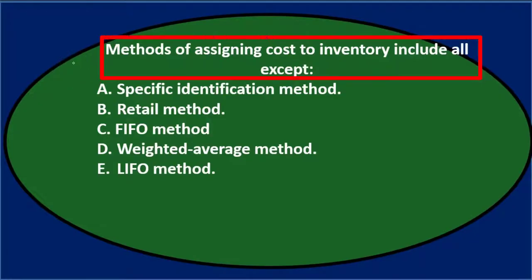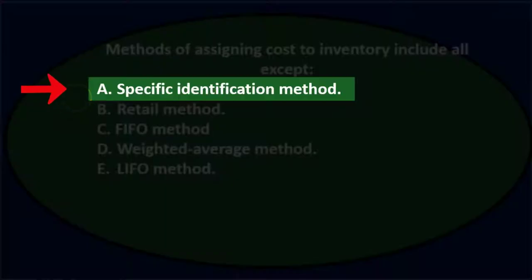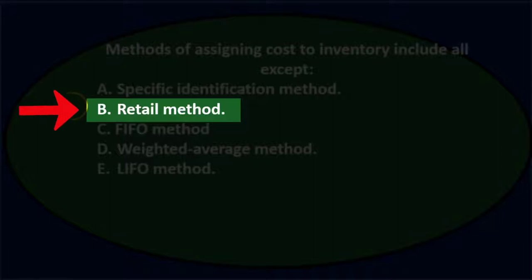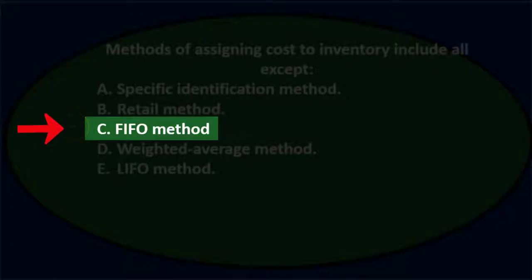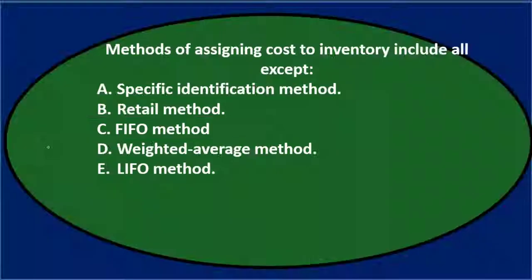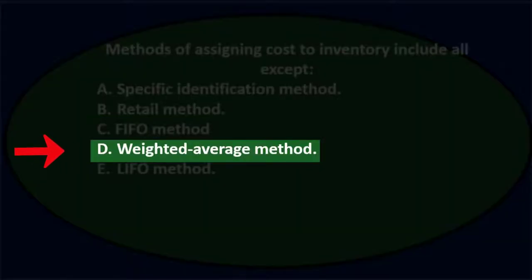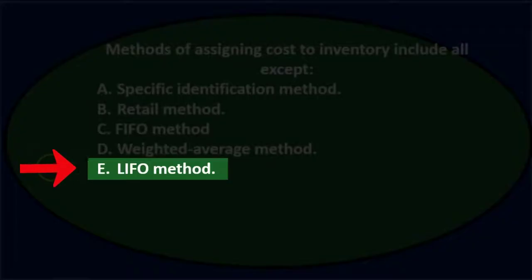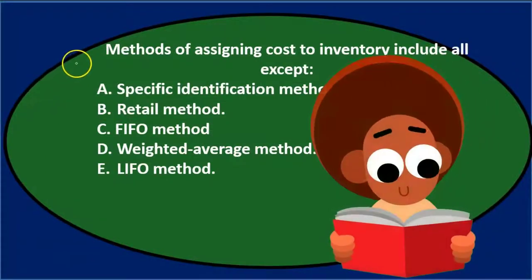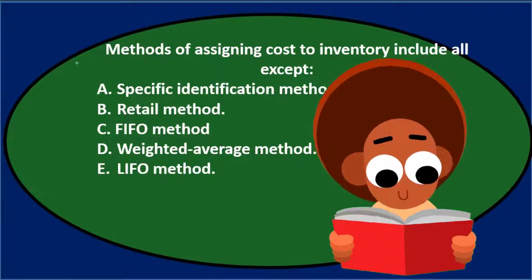First question: Methods of assigning cost to inventory include all except — A. Specific identification, B. Retail method, C. First in, first out method or FIFO method, D. Weighted average method, and E. Last in, first out or LIFO method. We'll read through these again and see if we can eliminate any of them.